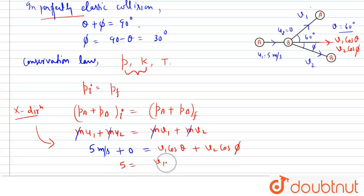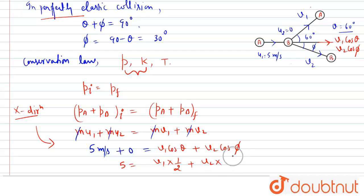Substituting the values: 5 equals V1·cos(60°) plus V2·cos(30°), which gives 5 equals V1·(1/2) plus V2·(√3/2). Multiplying through by 2: 10 equals V1 plus √3·V2. This is equation number 1.